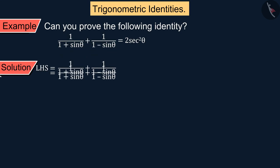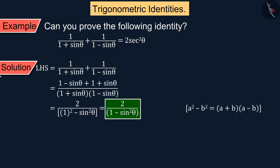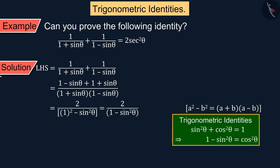We take the lowest common multiple and solve, from which we get 2 divided by (1 − sin²θ). We know that sin²θ + cos²θ = 1, with the help of which we replace (1 − sin²θ) with cos²θ.